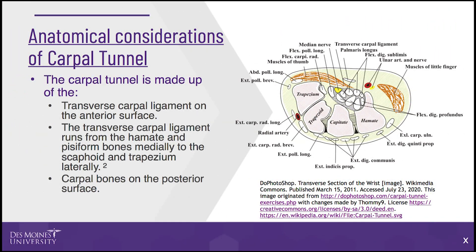The carpal tunnel is made up of the transverse carpal ligament on the anterior surface and the carpal bones on the posterior surface. The transverse carpal ligament runs from the hamate and pisiform bones medially to the scaphoid and trapezium laterally.